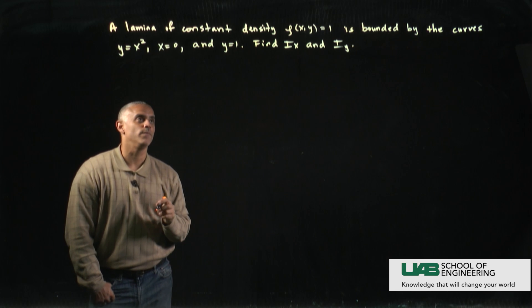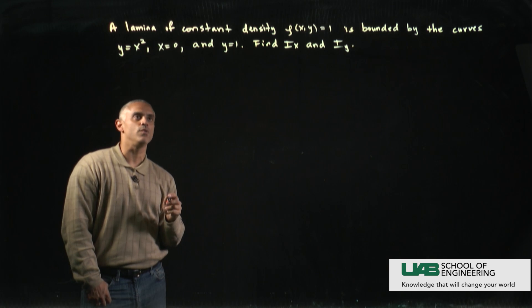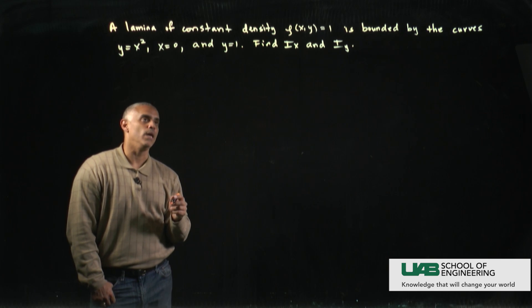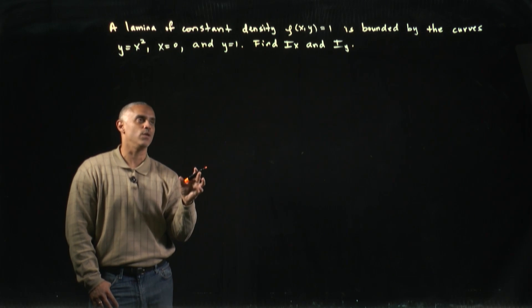A lamina of constant density ρ(x,y) equals 1 is bounded by the curves y equals x squared, x equals 0, and y equals 1. We want to find the amount of effort it takes to rotate that lamina about the x and y axes.